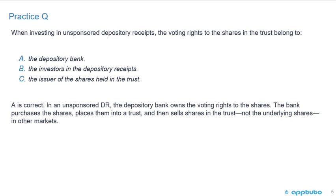There can be a lot of exam questions that are just on little factoids — if you know it, the question is really easy; if you've overlooked it, you're guessing. A is correct. In an unsponsored depository receipt, the depository bank owns the voting rights to the shares. The bank purchases the shares, places them into a trust, and then sells the shares in the trust, not the underlying shares in other markets.